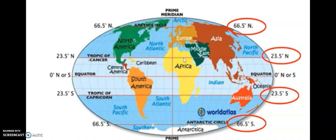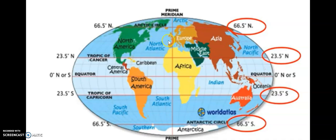Countries located between the tropic of cancer and the tropic of capricorn experience two seasons: the dry and the wet. Countries in the northern region between the arctic circle and the tropic of cancer experience four seasons, as do countries in the southern region between the tropic of capricorn and the antarctic circle. We call these the northern and southern temperate regions. The area between the tropic of cancer and tropic of capricorn is called the tropical region, experiencing two seasons.